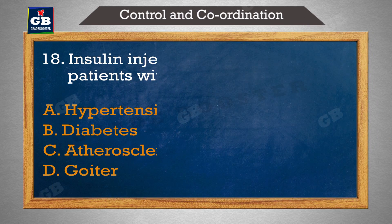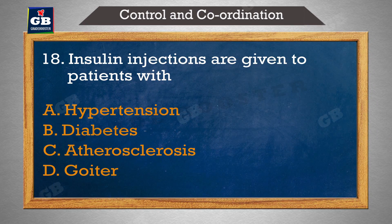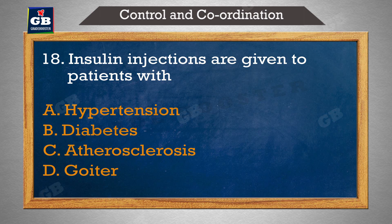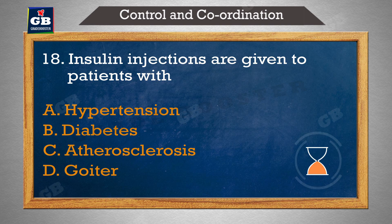Insulin injections are given to the patients with — in rogiyon ko insulin injection diya jata hai: A) hypertension, B) diabetes, C) atherosclerosis, D) goiter.